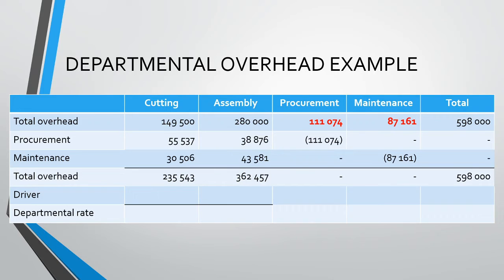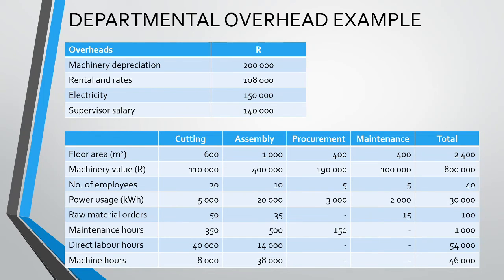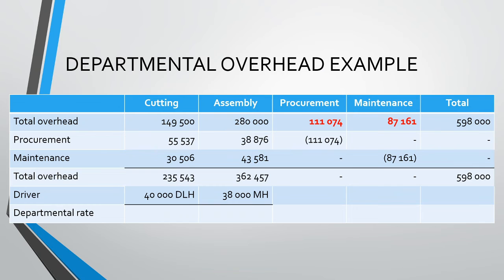Now we can total our overheads for each column. Notice what happens here: if we add up the overheads for the cutting and assembly departments, we arrive back at the correct total overheads of R598,000. The additional overheads that we created through the simultaneous equations have disappeared and we are back at R598,000. Our next step is to identify our driver for each production department. Cutting is labor intensive so we use direct labor hours, while assembly is capital intensive and we use machine hours. We divide our total overheads for each department by the cost driver to arrive at separate overhead rates of R5.89 per direct labor hour for cutting and R9.54 per machine hour for assembly.